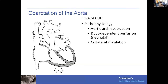This is important because as the ductus closes, some of the ductal tissue may be making up part of the wall of the aortic isthmus and may constrict as the duct closes. Coarctation of the aorta is present in 5 percent of congenital heart disease — a fairly common congenital heart defect — and represents an aortic arch obstruction at the aortic isthmus.